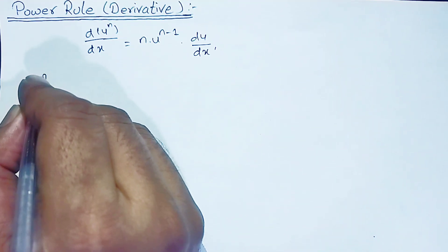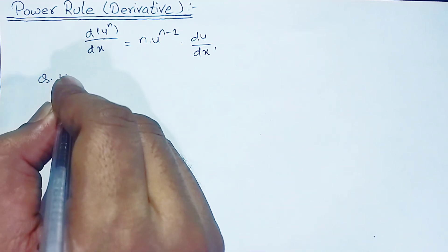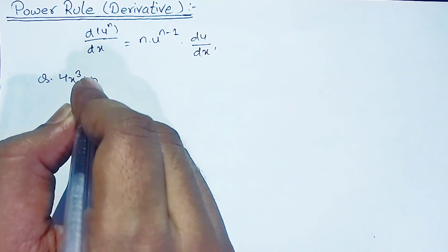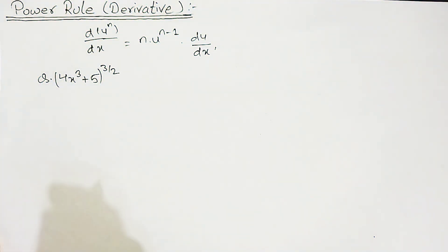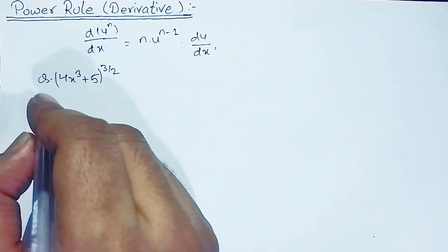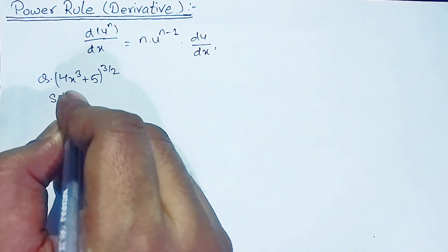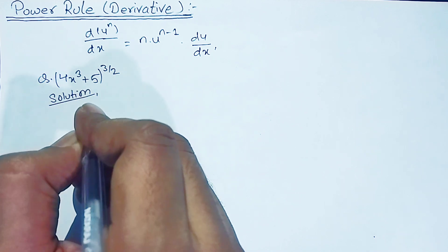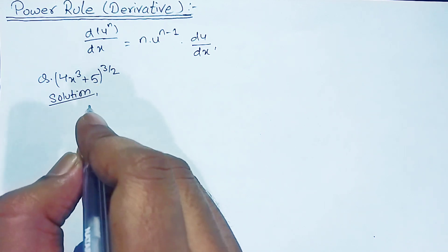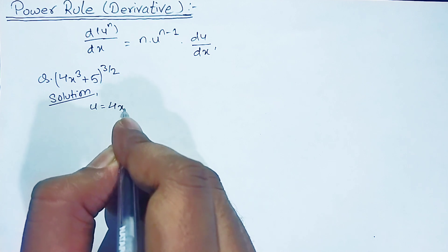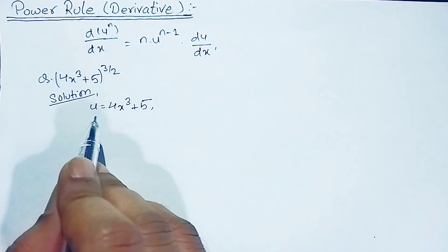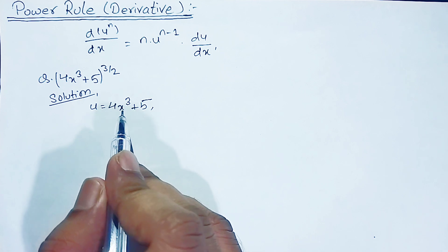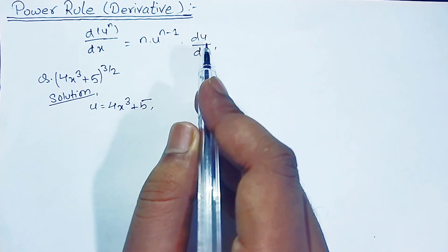Our first question is Q equals to (4x³ + 5) to the power 2. We are going to solve this using the power rule. In the solution, we assume that u is equal to 4x³ + 5.